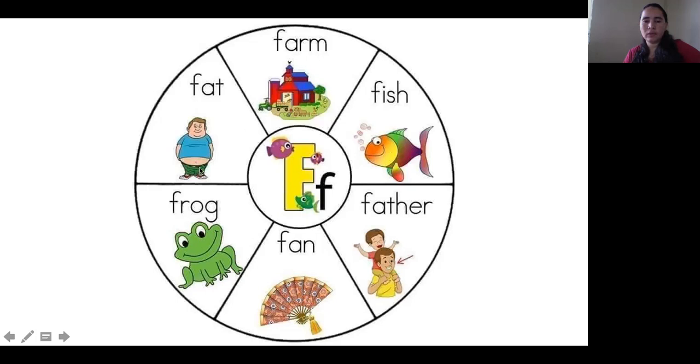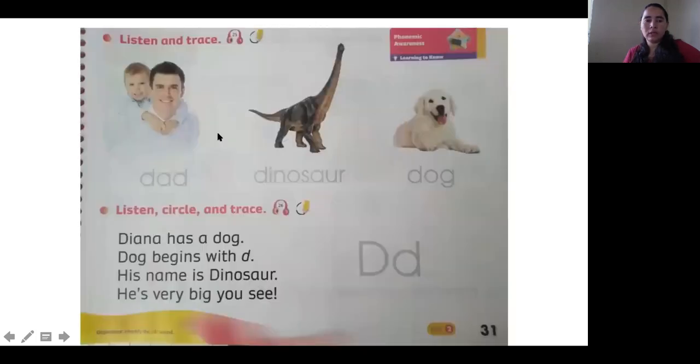Very good. For today, in your Starfish book, on page 31, we're going to write the letter D, the word dinosaur, and the word dog.